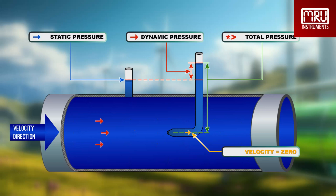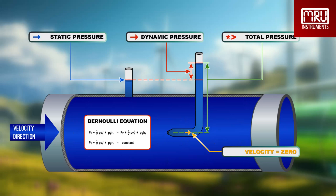Stagnation or total pressure represents the pressure at a point where the velocity of the fluid has come to a complete stop. Now that we know the static pressure, the dynamic pressure, and the total pressure, we can calculate the flow using the Bernoulli equation.